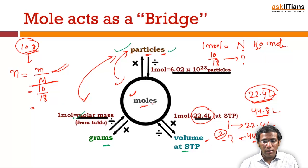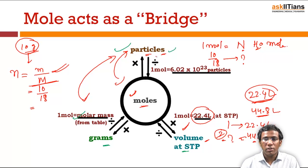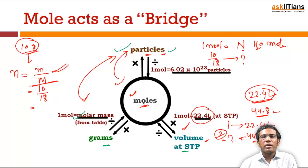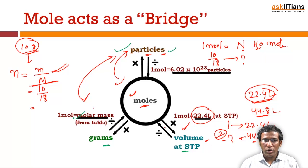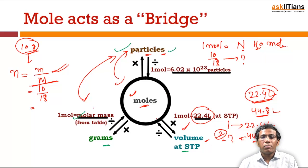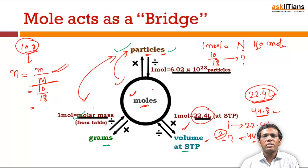Even if I know the number of particles, I can calculate the volume of the gas — I calculate number of moles from the particles, then calculate the volume from the moles. So mole is the one acting as a bridge between these three quantities: mass, particles, and volume. Understanding this concept is very important for solving many numerical questions in chemistry.